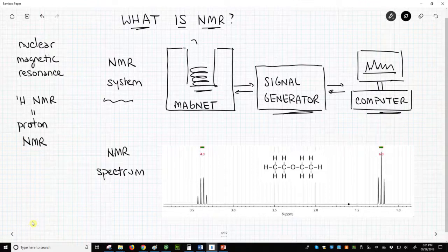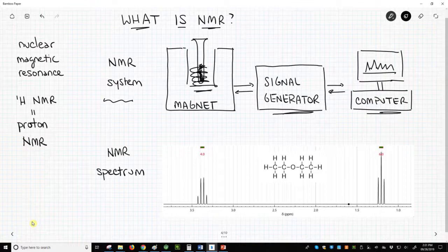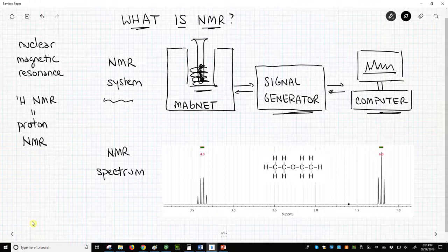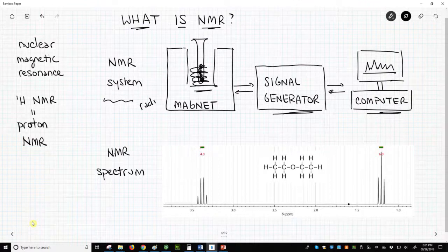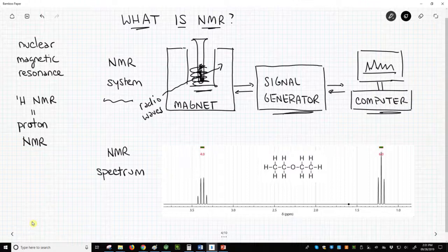A tube holds a sample of our molecule and the tube is dropped into a magnetic field. By seeing how radio waves from an NMR spectrometer can interact with a sample, one can get something called an NMR spectrum.